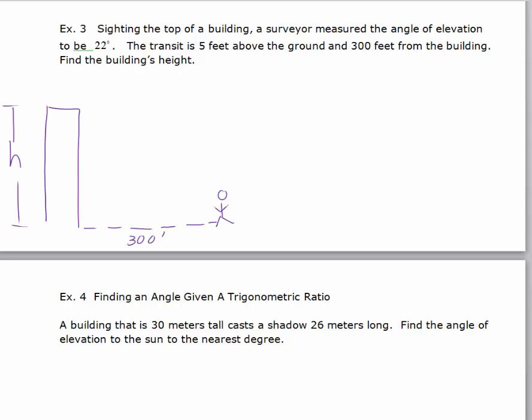We've got the height of a building which we don't know. We've got a surveyor standing 300 feet from the base, and he's looking through a transit which is 5 feet above the ground. So I'm going to draw a horizontal line here, and the angle of elevation from that transit is looking up to the height of the building. This little angle in here is 22 degrees. I know that the height of the transit is 5 feet.